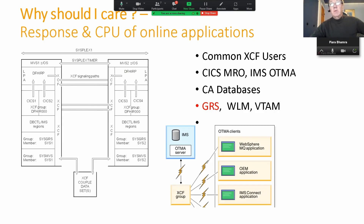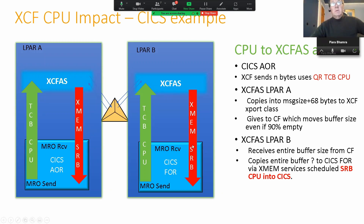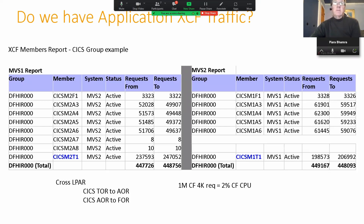IBM decided the manual tuning was too complicated, so they created XCF automatic tuning in z/OS 2.4. Automatic tuning always makes me a little leery, so I thought I would look at a couple of customers going through migration and see what happens. I had some concerns which really didn't turn out to be true. One thing I found in pre-2.4 manual configurations didn't work correctly — IBM looked at it, confirmed it, and fixed it, but only in the automatic version.